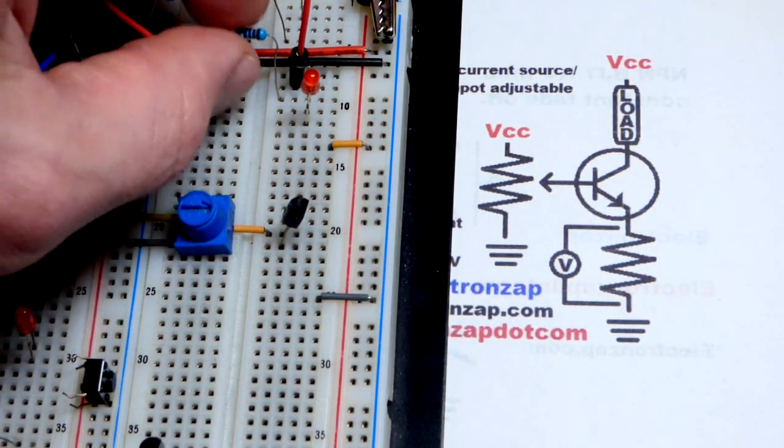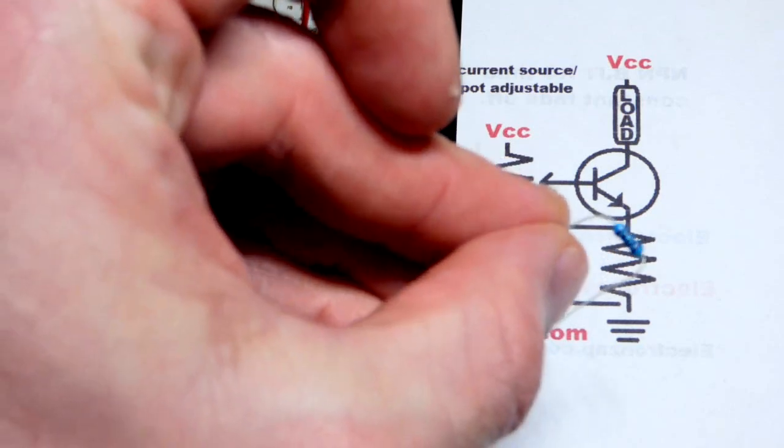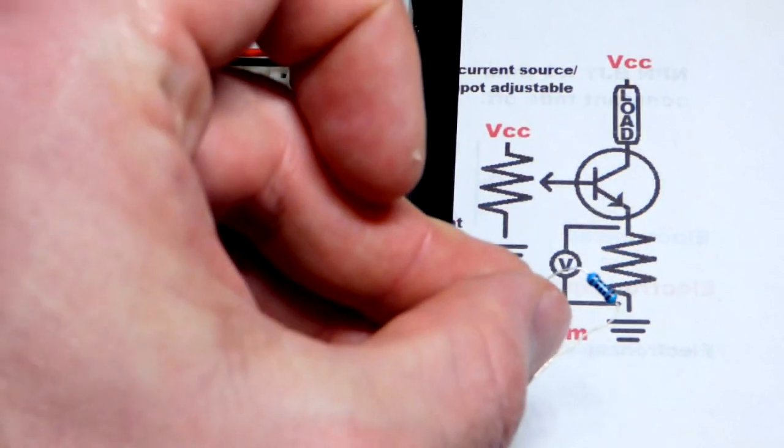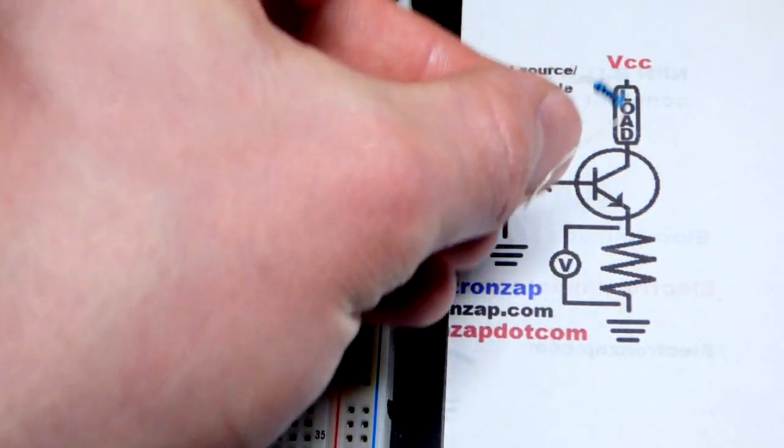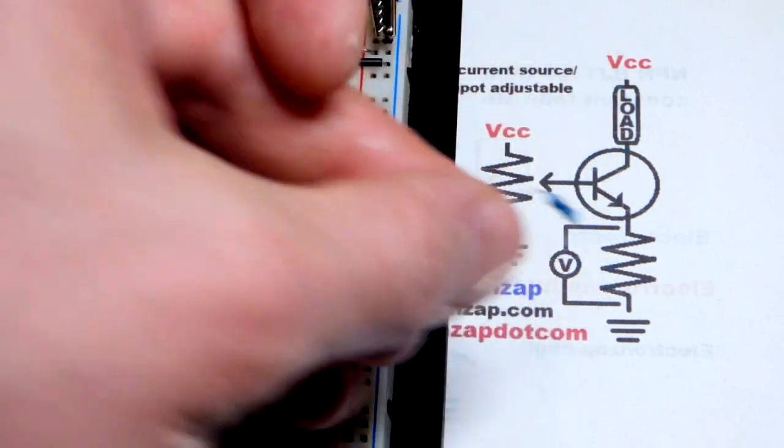Now I'm going to use a 1 kiloohm resistor. That makes the math easiest. We use Ohm's law. The voltage across the resistor will result in the current flowing through that whole path there, that whole series path.